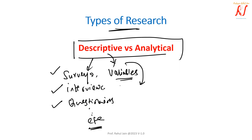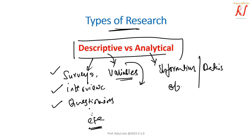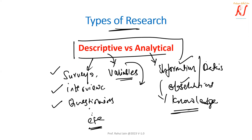On the other hand, in analytical type of research, the information, details, observations, or knowledge is already there. Based on that existing information or knowledge, we need to analyze and use it from different perspectives for analytical purposes. The researcher has to use the facts and all the information already available and analyze them to make a critical evaluation of the material.